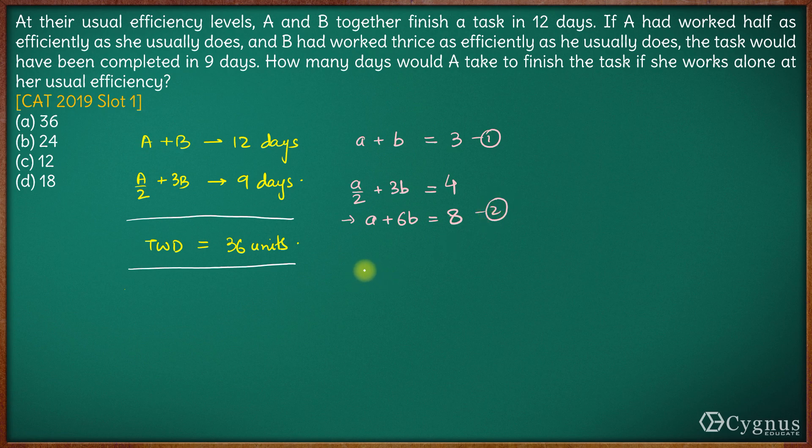So we have second equation minus first equation gives us A minus A is 0, 6B minus B is 5B which is 8 minus 3 is 5. So B here comes out to be 1.